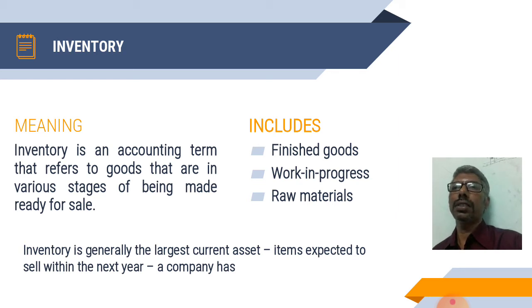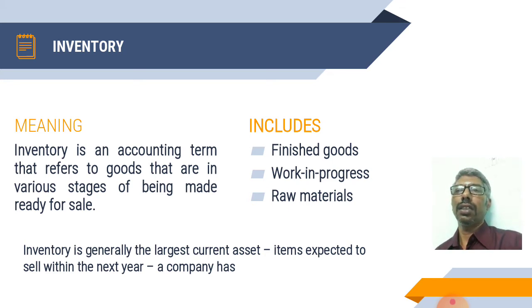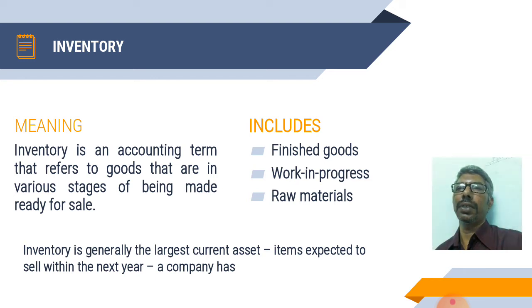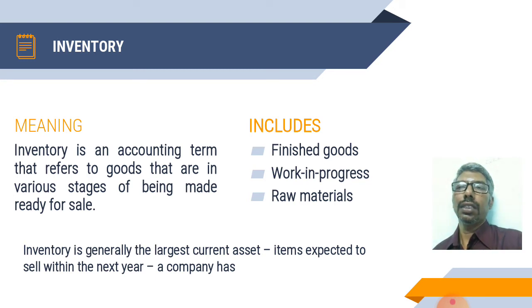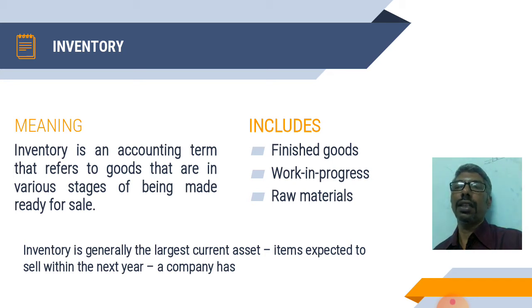In merchandising or trading businesses, there is no such classification of materials. There is only one type of goods that is purchased from the supplier and sold to the consumer or customers with some profit. In manufacturing businesses, the firms purchase material from the supplier, process it, convert it into finished goods, and sell to consumers. Therefore, manufacturing businesses have three types of material: raw materials purchased from suppliers, finished goods produced in the factory, and intermediate products.